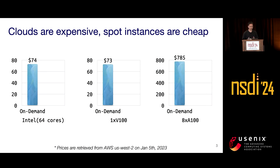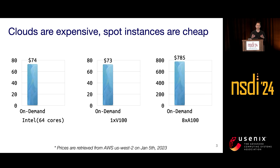Nowadays, clouds are widely adopted, and people have realized that clouds are quite expensive. For example, AWS Intel CPUs and V100 GPUs can cost $70 per day, and for eight A100 GPUs, it can cost $800. This makes life hard for users trying to run their compute-intensive workloads like AI workloads on the cloud.